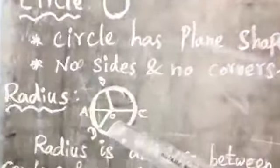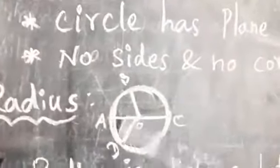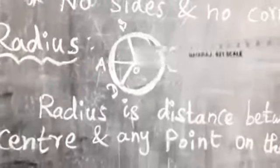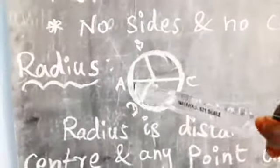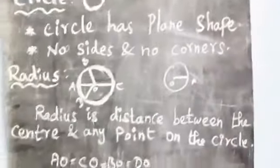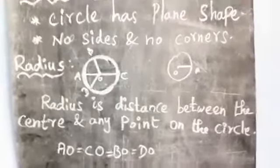The radius is the distance from center O to any point on the circle. OA, OB, OC, OD — each one is a radius. Look at one circle with center point O. OA is the radius. The point on the boundary connected to O is called the radius. Radius is the distance between the center and any point of the circle.